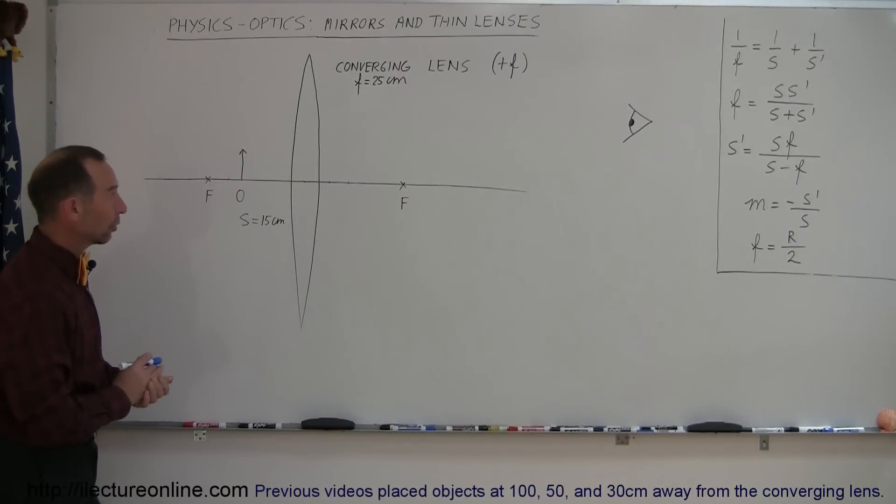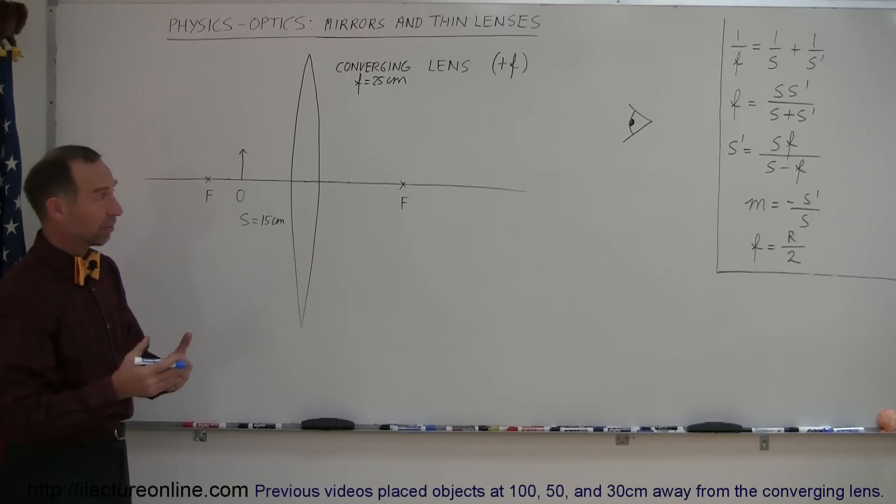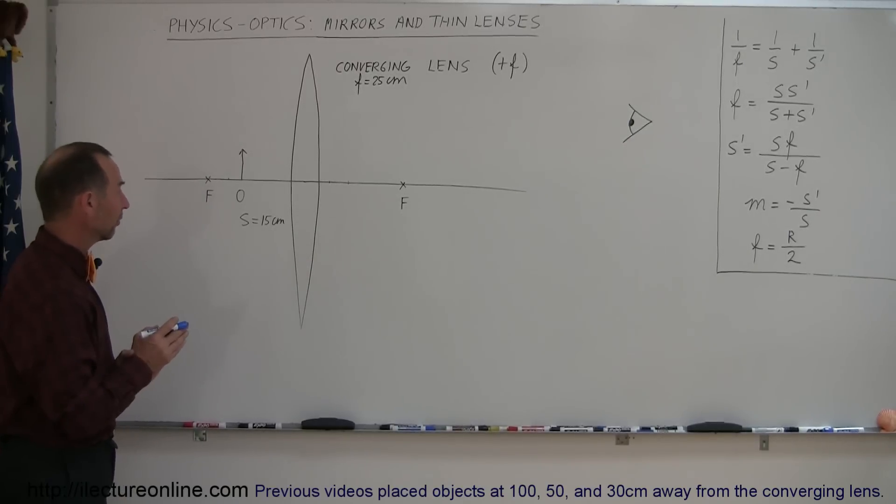Here's our next example. Again, we're still working with a converging lens. The focal length is 25 centimeters. It's positive focal length because it is a converging lens.